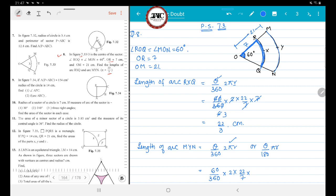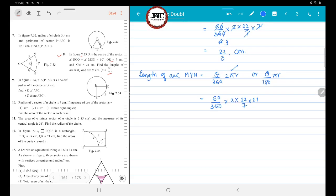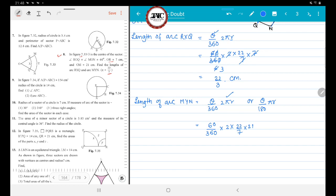Radius is how much? 21 over here, from O to M. So 21. So 0, 0 will get cancelled.